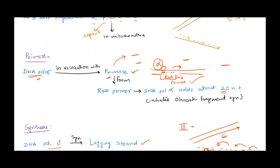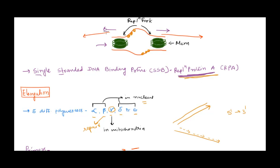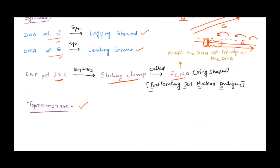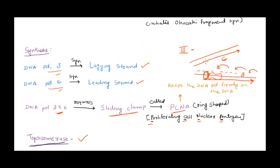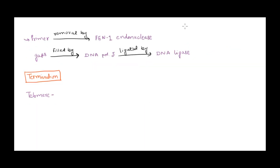As the replication fork moves in both directions, the DNA ahead of the fork produces supercoiling, which is removed by topoisomerase. Once DNA synthesis is finished and both strands are synthesized, the RNA primers need to be removed. In prokaryotes, primers were removed by DNA polymerase I. In eukaryotes, the RNA primers are removed by an endonuclease enzyme called Flap Endonuclease, or FEN1. The gaps left after primer removal are filled by DNA polymerase delta, and the fragments are joined by DNA ligase.